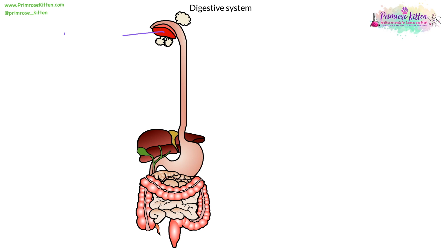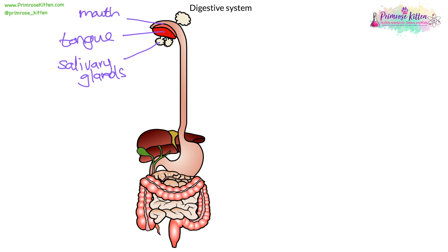Starting with the tongue, which helps to move food around while you're chewing it. This is the mouth — the entrance to where food goes in. These are the salivary glands; there are two of them. They help to release amylase and enzymes so that your food gets digested while it's still in your mouth. This is the esophagus, which leads down into the stomach.